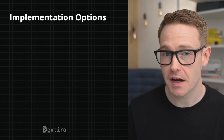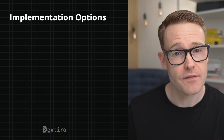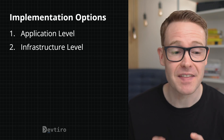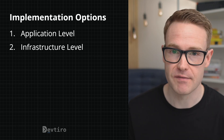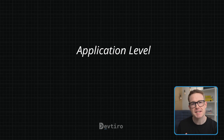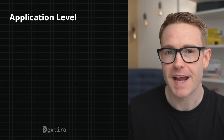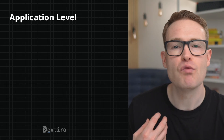Now, there are two main ways to implement service discovery in a microservices architecture: the first is at the application level, and the second is at the infrastructure level. Which microservices concepts are blocking you right now? Is it the API gateway? Is it messages and events? Let me know in the comments below.